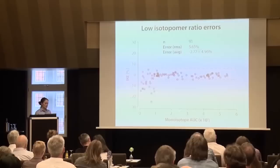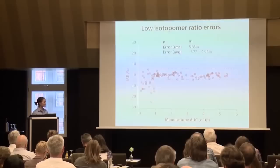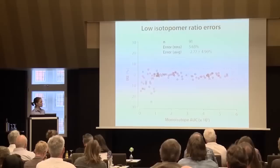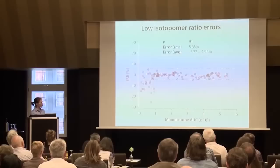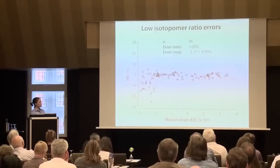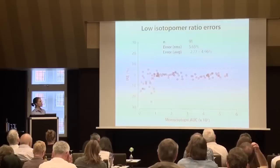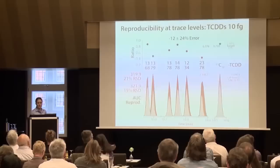Also important, when we get into many of the EPA-based methods that we like to run, are isotopomer ratio errors. Here I've taken those 93 compounds and looked at the isotopic ratio error. It is, of course, related to the intensity of the ion itself, but above a certain threshold, we are in general having errors less than, on average, 3%.